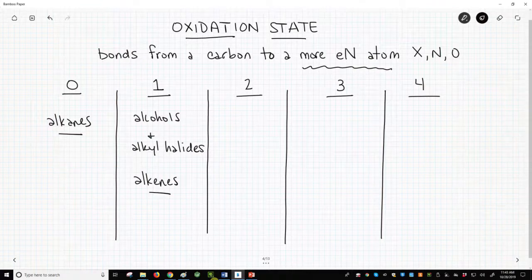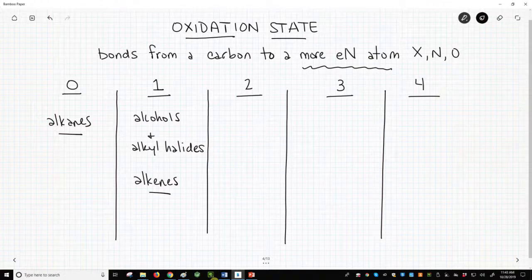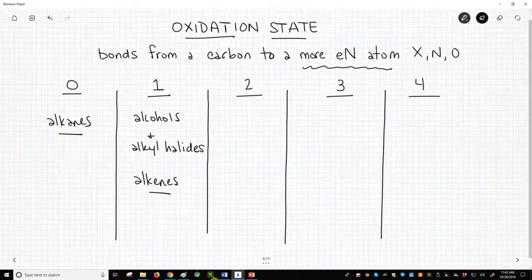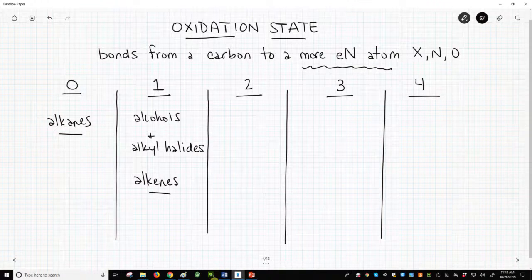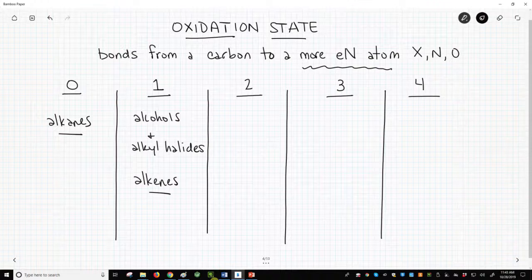Alkene carbons normally have zero bonds to electronegative atoms. However, alkenes can undergo a hydration reaction, which we learned is neither an oxidation nor reduction. Therefore, an alkene must be in the same oxidation state as an alcohol. This is a bit confusing and it demonstrates why counting bonds to electronegative atoms is an easy, yet imperfect, way to assign oxidation state.